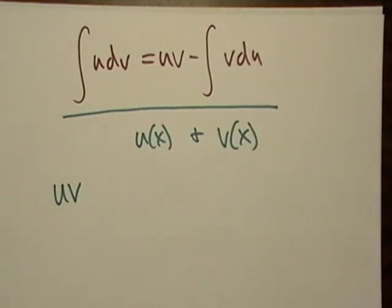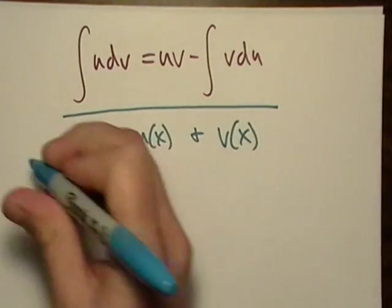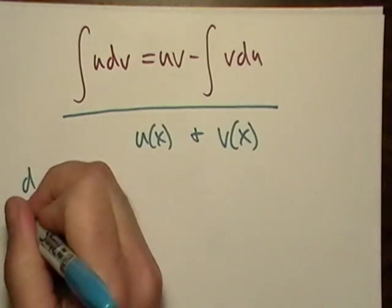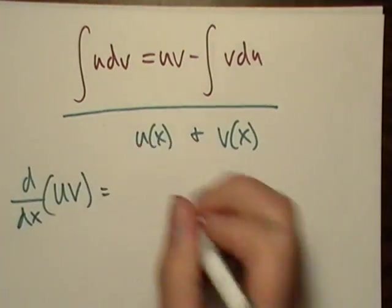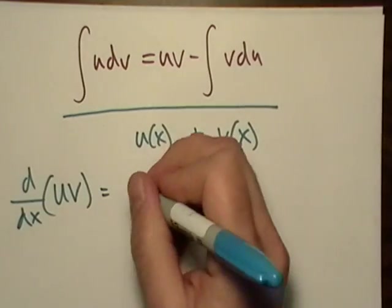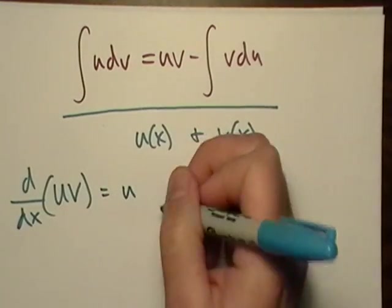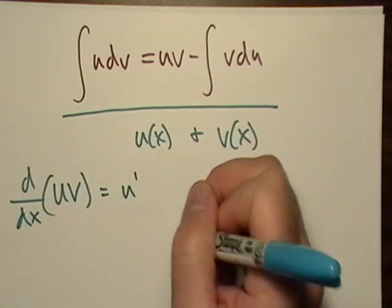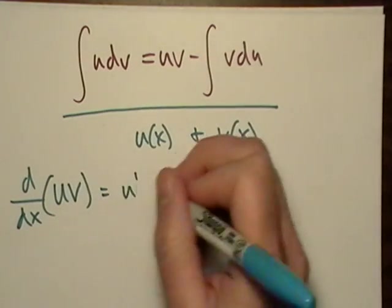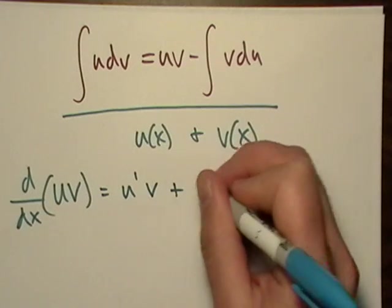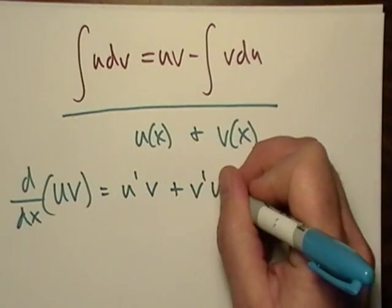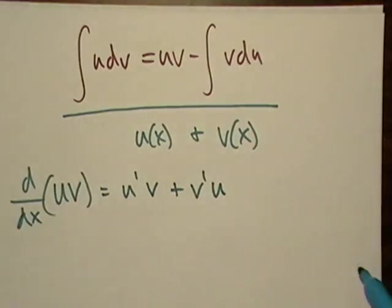and I want the derivative. Let's see, that'll be with respect to x. That'll be, what is that going to be? That's going to be u prime times v plus v prime times u.